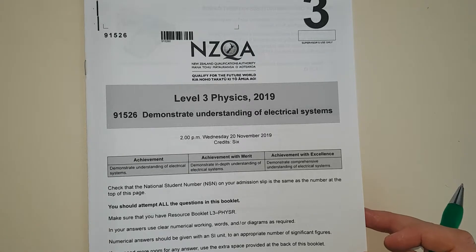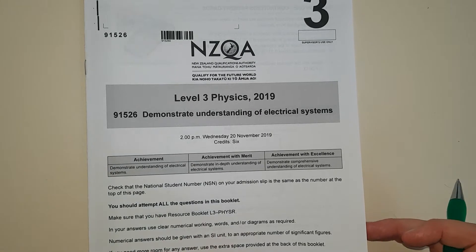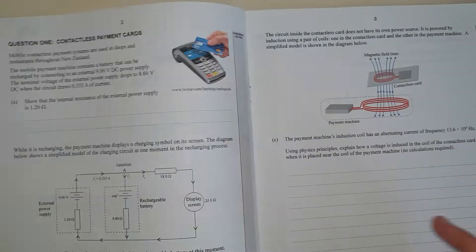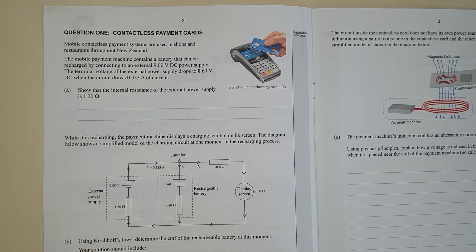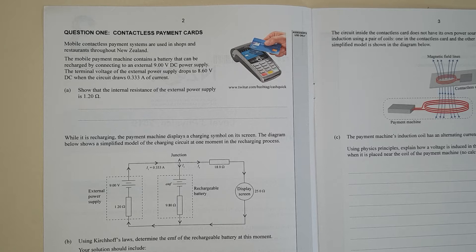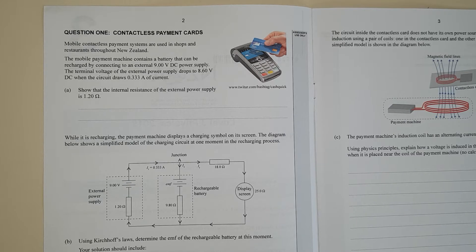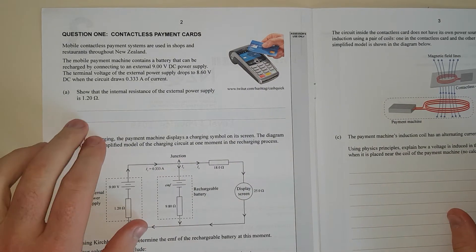For this video, I'll be working through the 2019 Level 3 Electricity Exam. Question one: Mobile contactless payment systems are used in shops, restaurants around New Zealand. The mobile payment machine contains a battery that can be recharged by connecting to an external 9V power supply. The terminal voltage of the external power supply drops to 8.6V when 0.33A of current are drawn through. Show that the internal resistance to the external power supply is 1.2Ω.